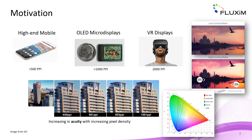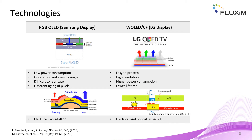Crosstalk will reduce the contrast ratio and temper the color gamut of the display. Therefore we should have a better understanding of this effect and analyze how we can reduce it effectively. Let us first look at the two most frequently used display technologies. The primary colors can be generated either by using directly red, green, and blue OLED pixels, or by a common white OLED whose light is filtered by three color filters. Both technologies have their advantages and disadvantages. Here we focus only on potential crosstalk aspects.